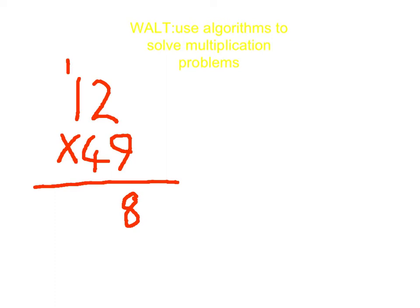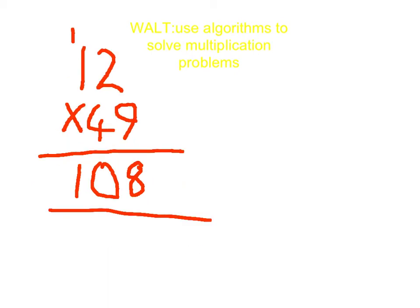And then you go 9 times 10 equals 19. Apart from you have a 10 left over, so it equals 100 and 8. And then you cross out the 1 like this.